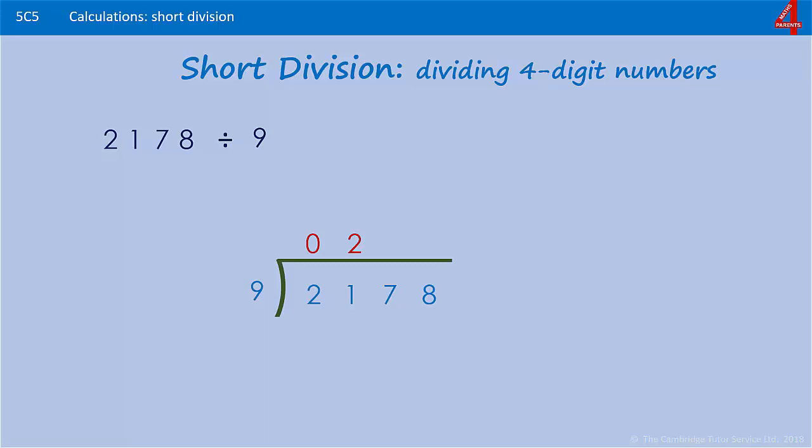We're going to put that 3 next to the 7. 9s into 37: 4 lots of 9 is 36, so we have 4 lots there and we have 1 left over. And 9 into 18: 2 lots of 9 is 18. So 2178 divided by 9 is 242.